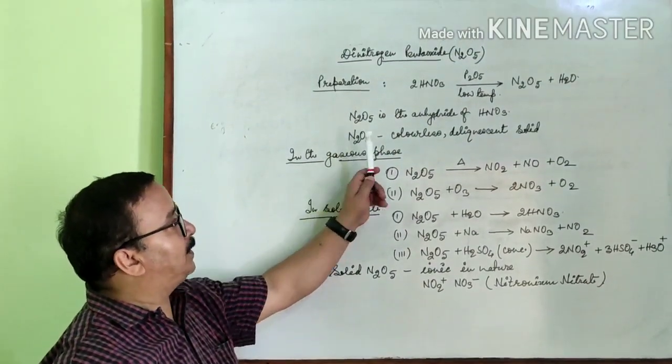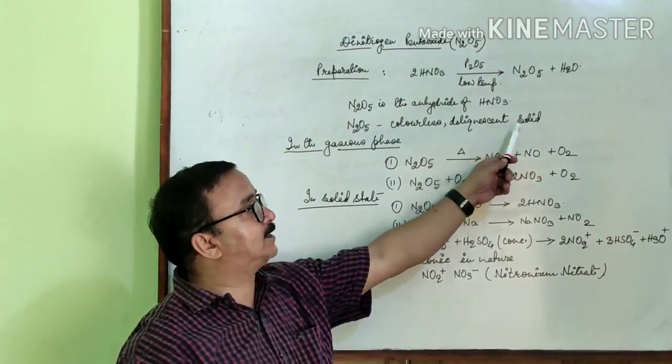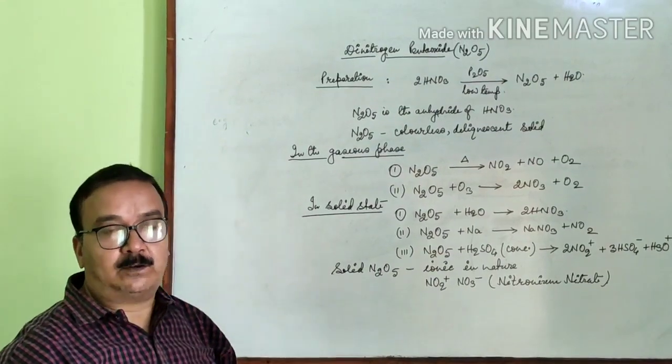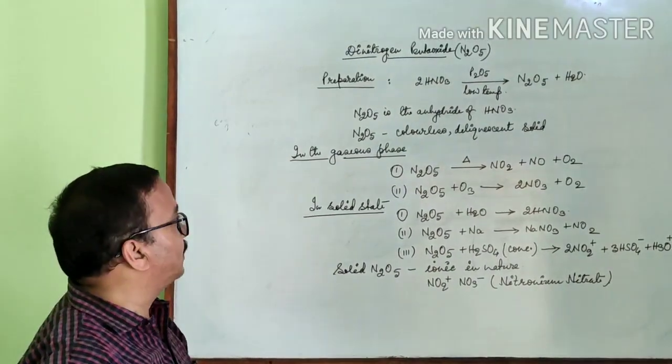N2O5 is a colorless and deliquescent solid. Deliquescent solid means which melts on absorbing moisture.